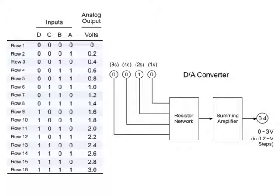The voltage reaches 3 volts when the binary input is 1, 1, 1, 1.